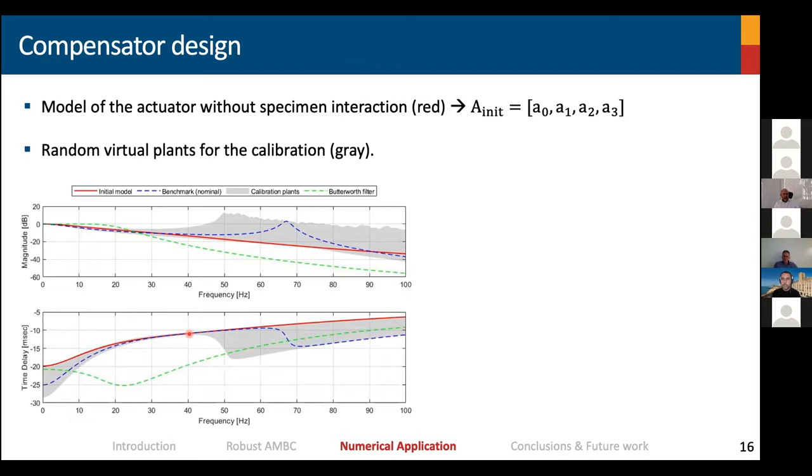The model of the actuator without specimen interaction, we consider those values to design our adaptive parameters A, which I call A initial. And this is the initial values of the adaptive parameters, not the adaptive gains. In this figure, I can show you in red, the initial model. Basically, this is the actuator, bare actuator without specimen connected. And the blue curve is the actuator with specimen interaction. You can see that there are some significant differences between the red and blue curve when we connect a specimen, especially in the time delays. In gray, I illustrate different virtual plants that were considered through uncertain parameters.